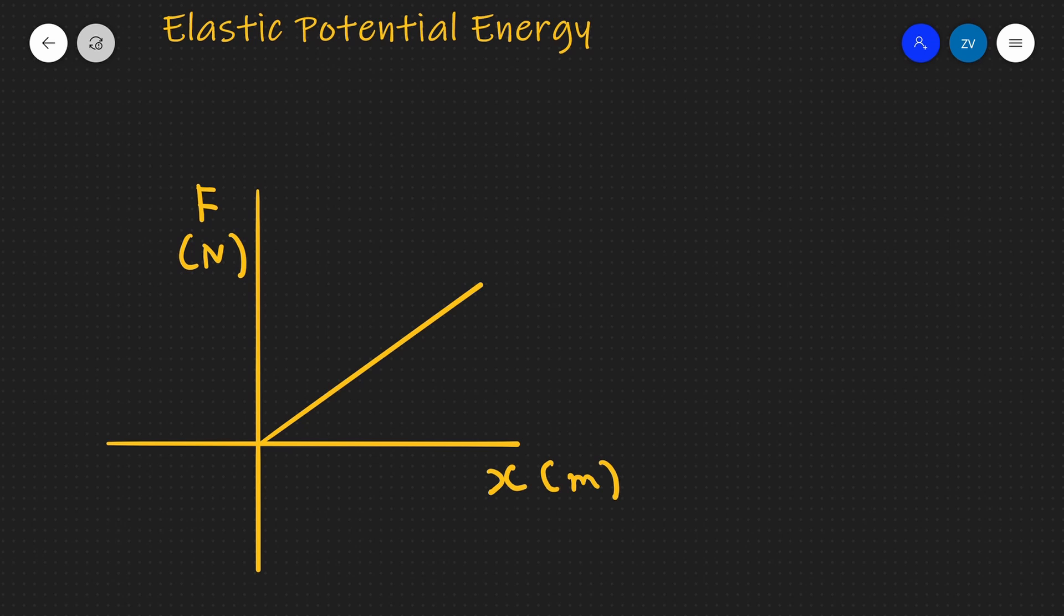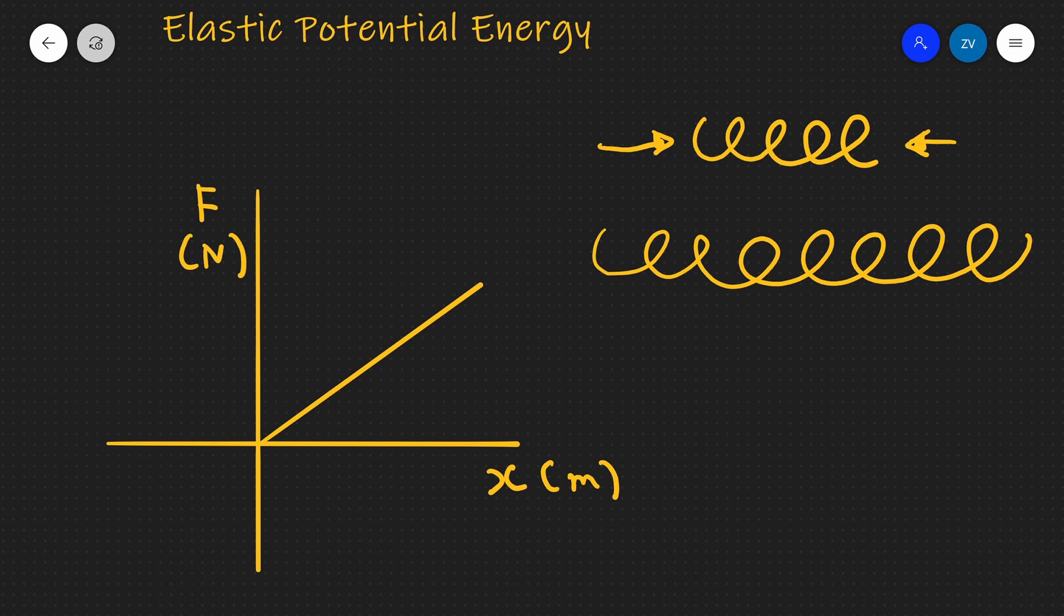What we're going to be talking about today is elastic potential energy. Let's imagine that we have a spring which has already been compressed. Let's say we have some forces keeping this spring compressed, preventing it from extending. If we remove those forces, the spring will extend.